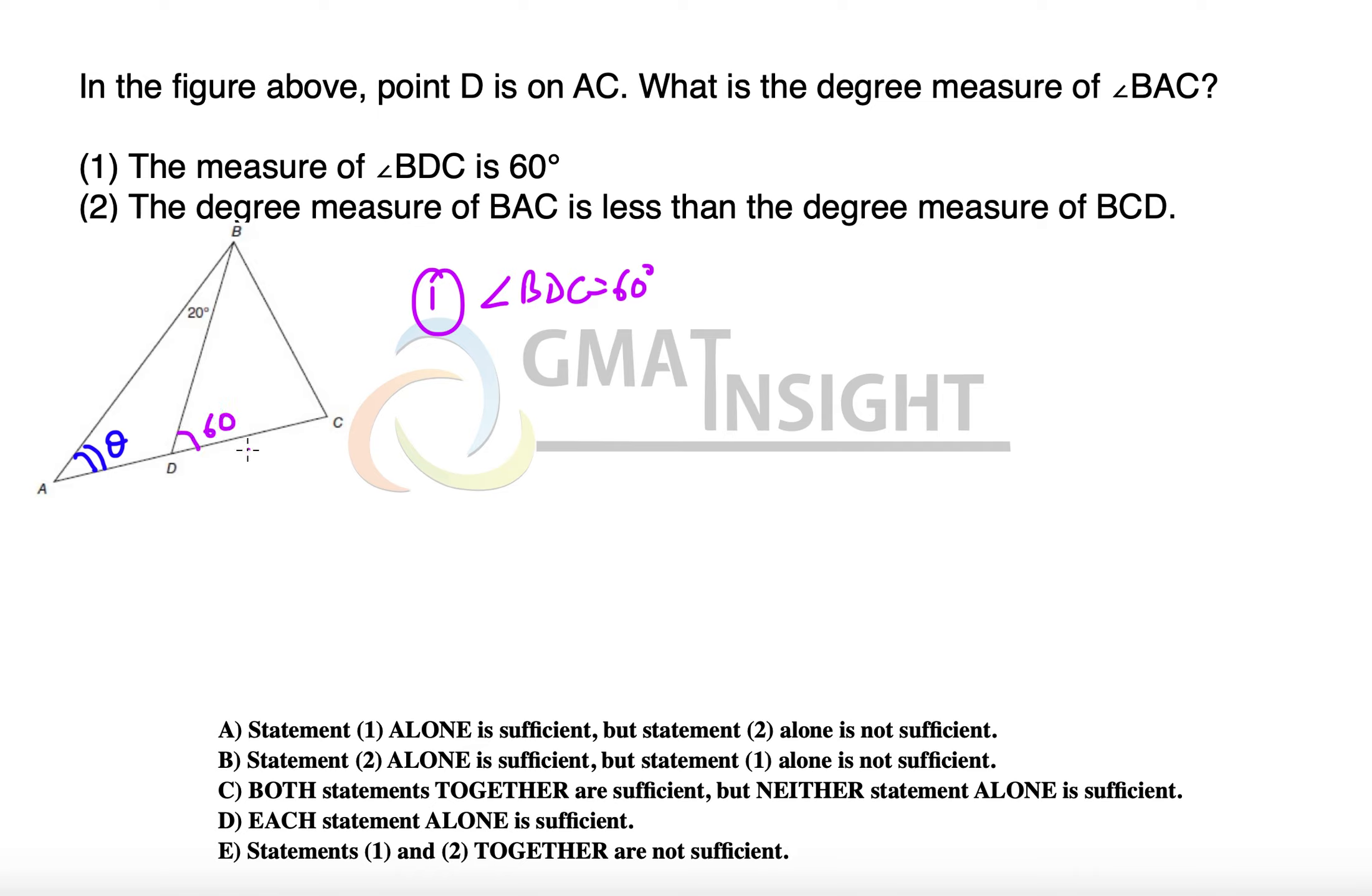Now, remember one thing that in any triangle, and we are looking at triangle ADB now, the exterior angle, which is this angle here, is always equal to the sum of the other two interior angles. The reason is that sum of these three angles is 180 and sum of these two angles is also 180, which means the exterior angle is always the sum of the other two interior angles.